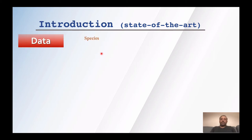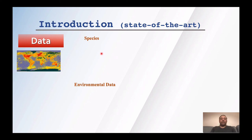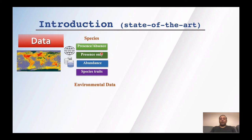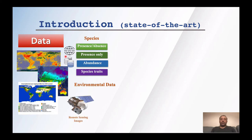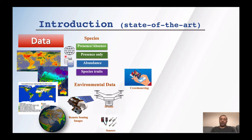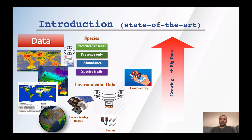For data, we have different resources for both species data and environmental data. Species data is available, for example, in the GBIF data portal in the form of presence-only or presence-absence. We may also have access to abundance data or even species traits. For environmental data, many resources are available — climatic data, land cover data, and remote sensing technology, which has played a significant role in providing products at different scales. We also have new technologies like drones, environmental sensors, and crowdsourcing approaches that provide data that are growing every day.